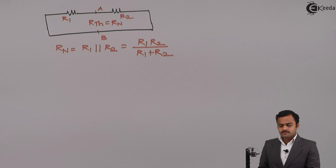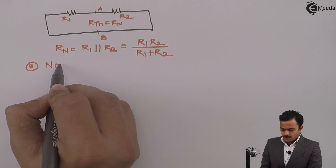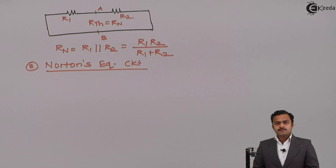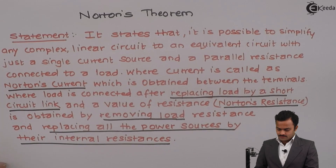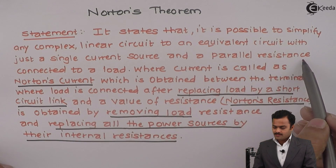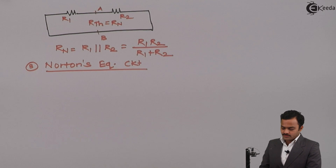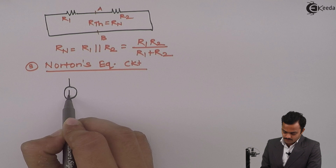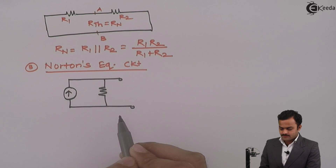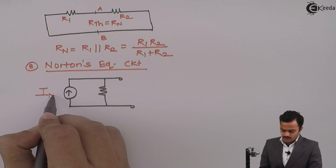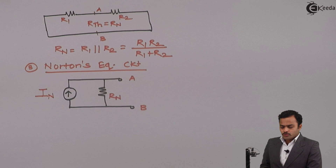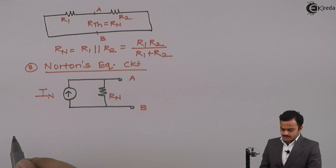So RN equals R1 parallel R2. The third step is drawing Norton's equivalent circuit. As per the theorem, you replace the circuit with an equivalent having a single current source and a parallel resistance. The Norton's equivalent circuit has a current source IN with parallel resistance RN, with terminals A and B. The fourth step is to use this equivalent circuit to find IL.